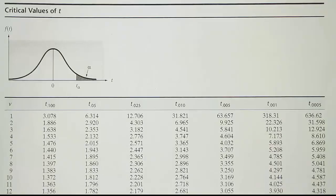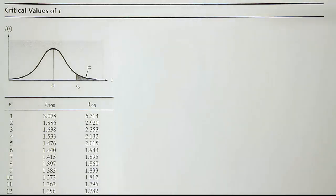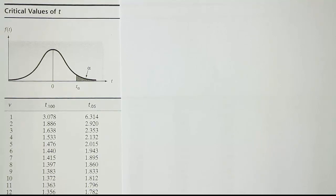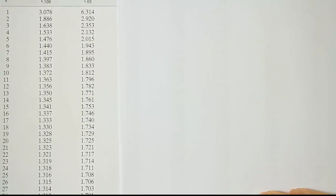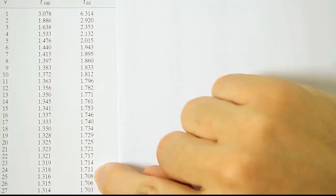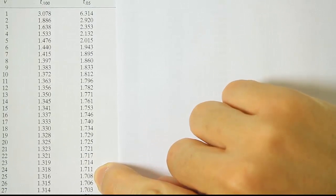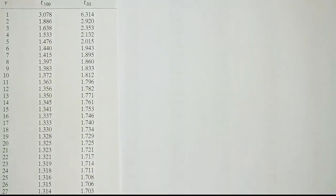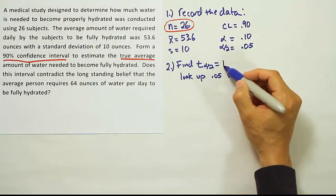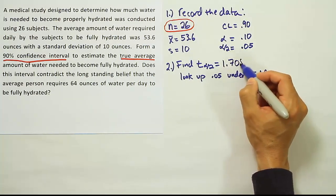We're looking up 0.05 and degrees of freedom 25. The 0.05 column is the second column, and let's scroll down to degrees of freedom 25. We get 1.708. So we find our critical T value to be 1.708.